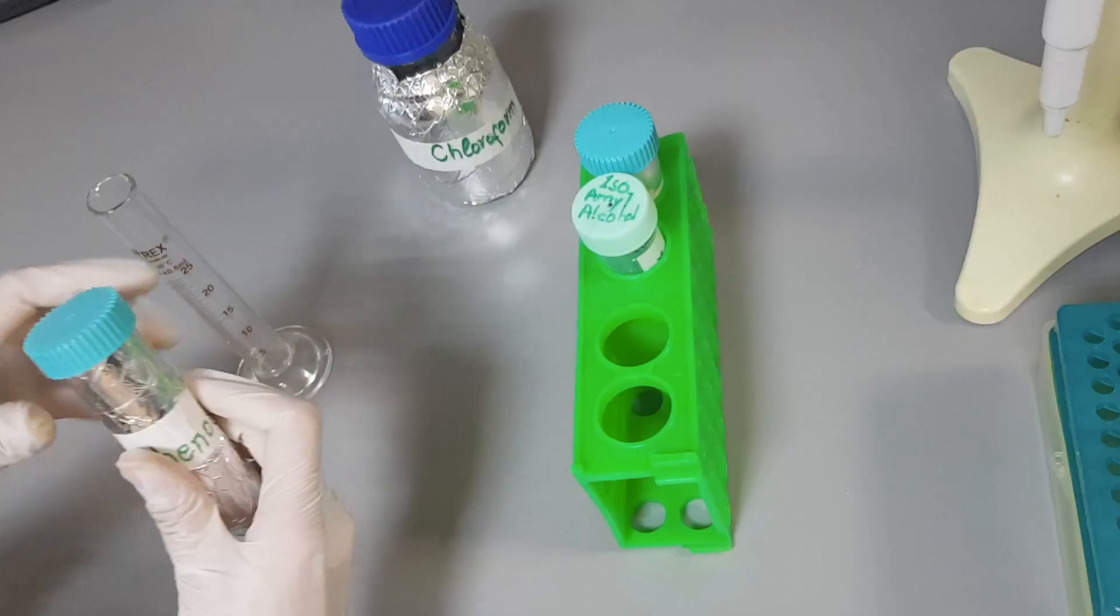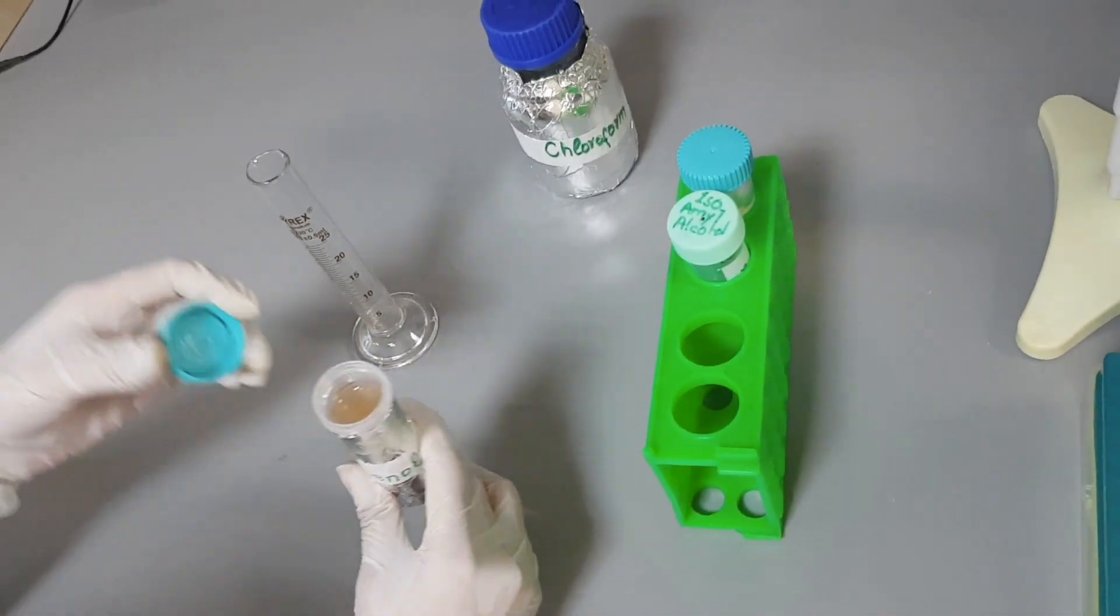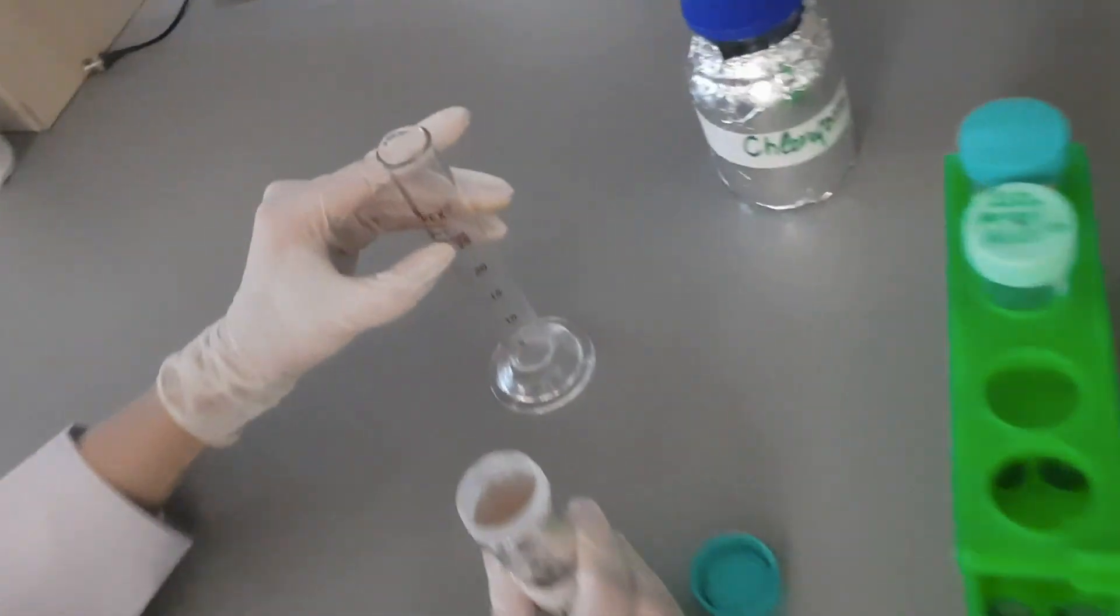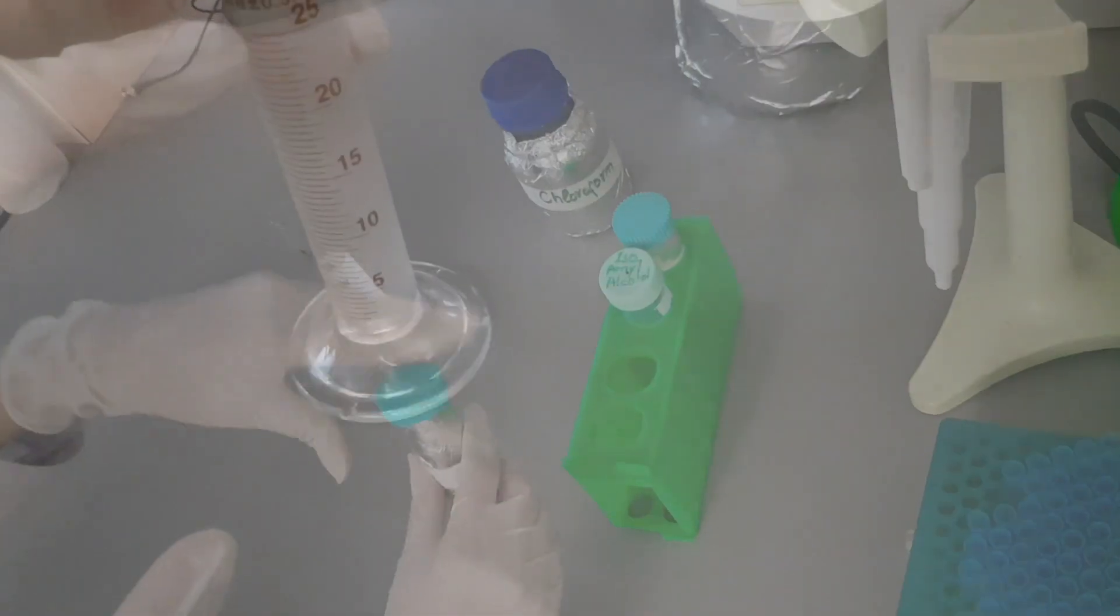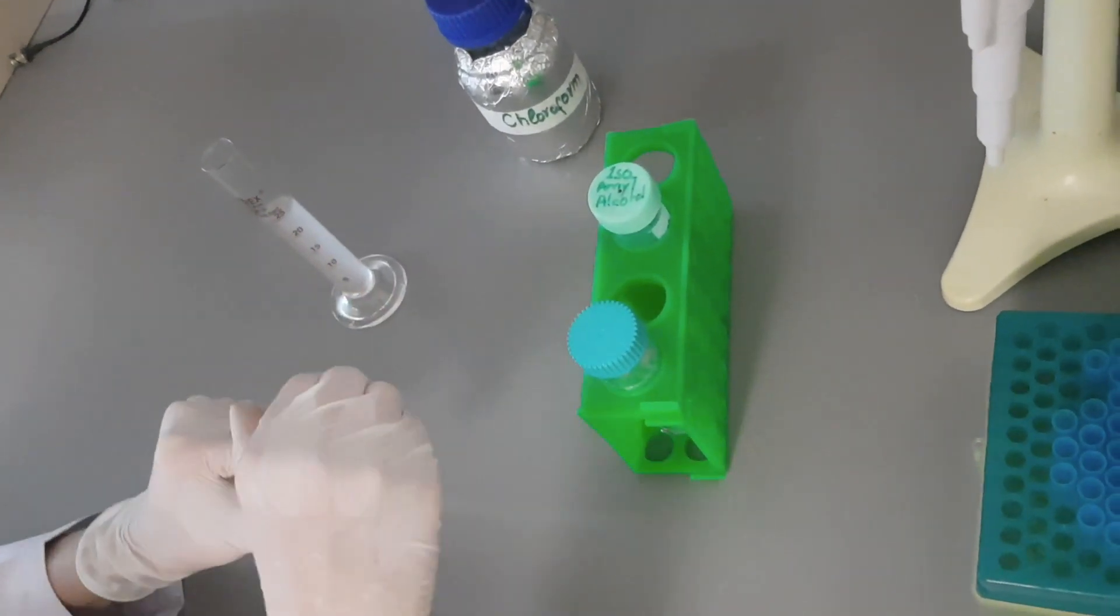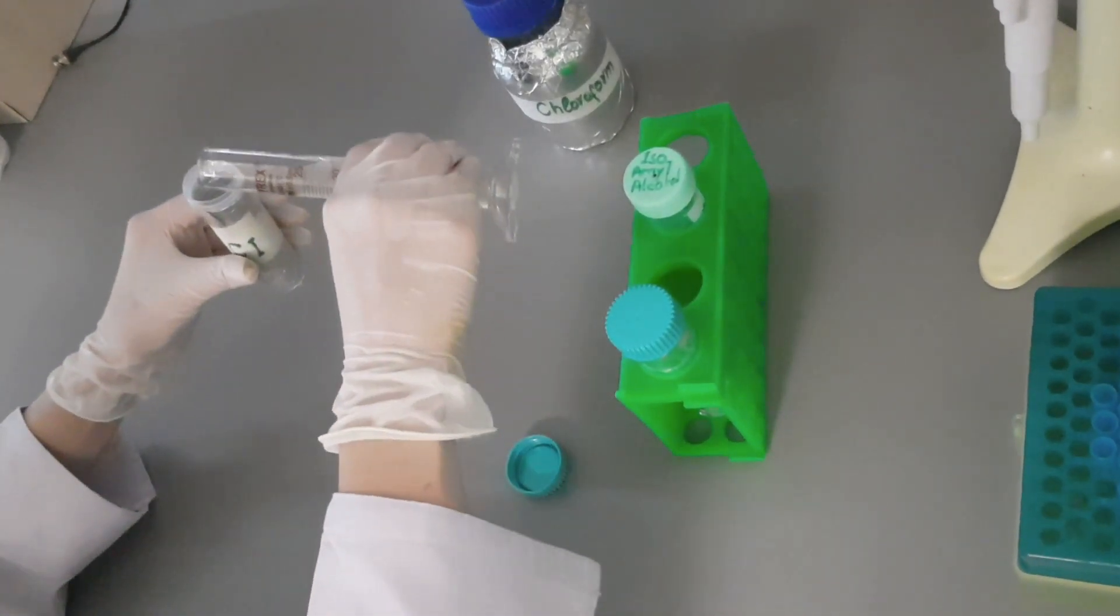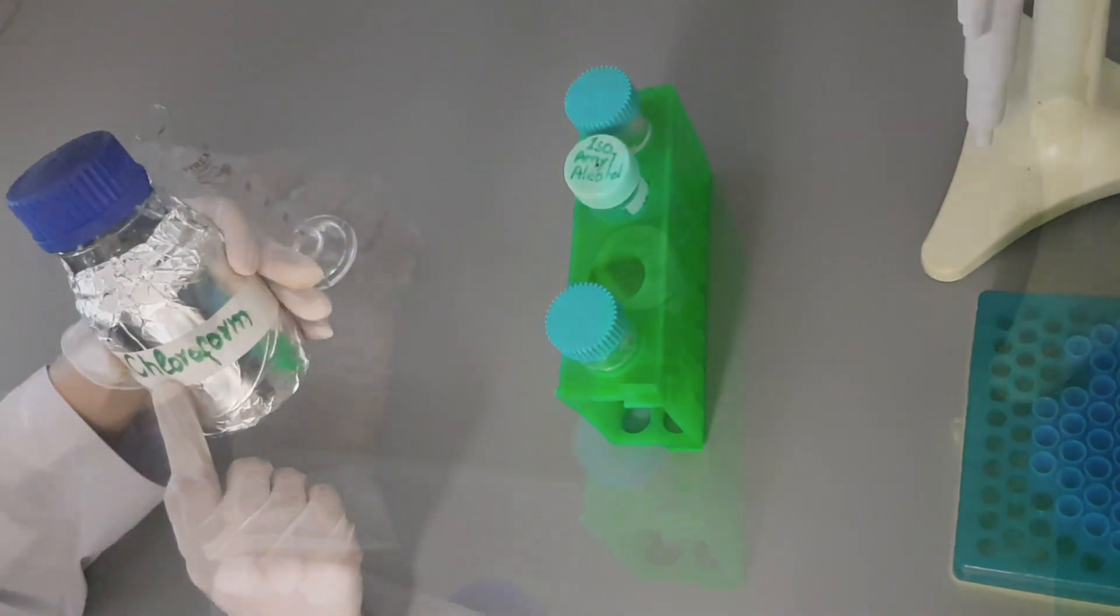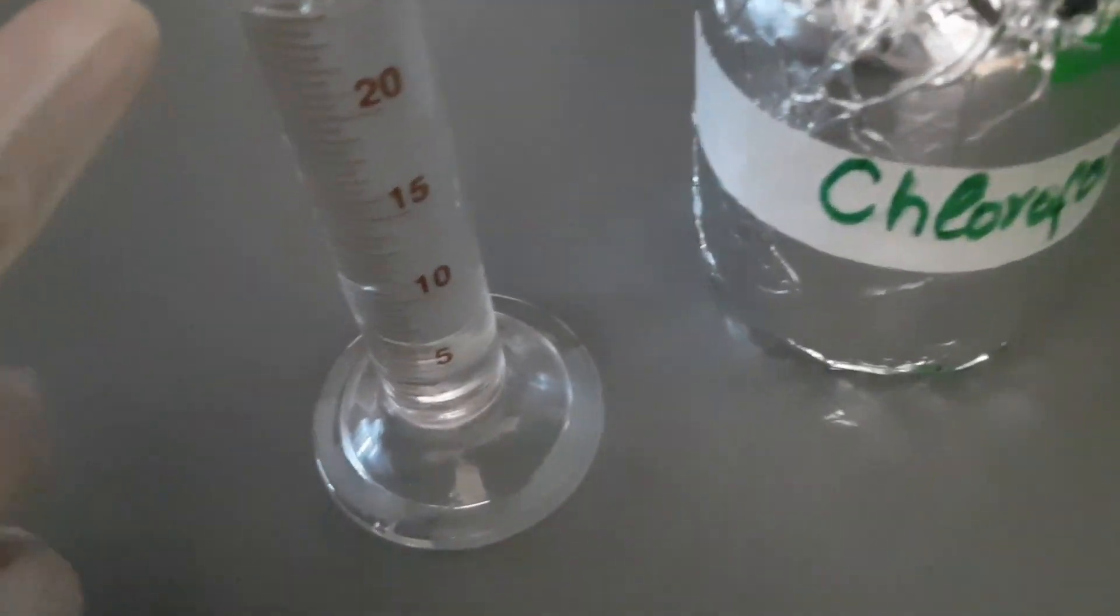For preparing 50 ml solution D, first switch the lights off as these reagents are light sensitive. Then measure 25 ml phenol by using a measuring cylinder and add in the falcon tube. Now measure 24 ml chloroform by using a measuring cylinder and add in 50 ml falcon tube.